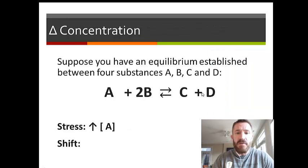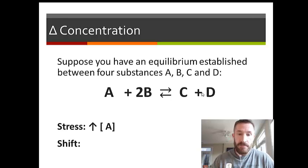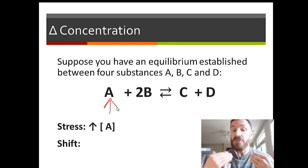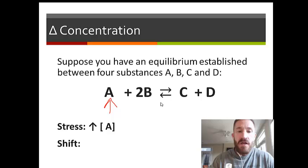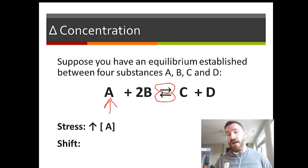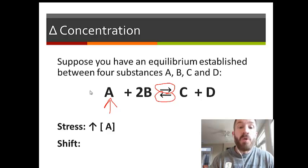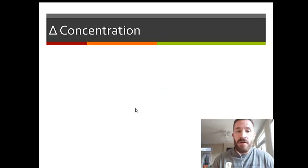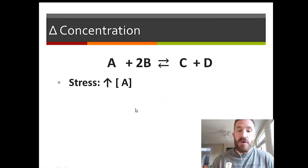Suppose you have an equilibrium system established between four substances A, B, C, and D, and the stress applied is an increase in A. There's been A added to the system at equilibrium, so there's too much A. You have to get rid of A. You can increase the rate of the forward reaction, or you could increase the rate of the reverse reaction. Increasing the rate of the forward would use up A and B, but increasing the rate of the reverse would make more A, so it would actually make the situation worse.